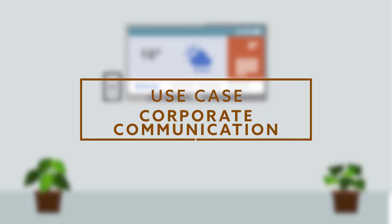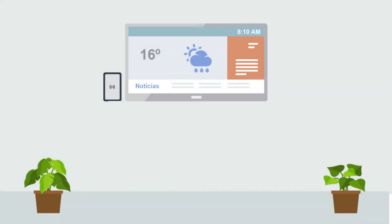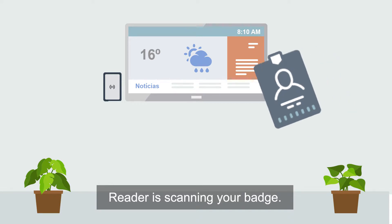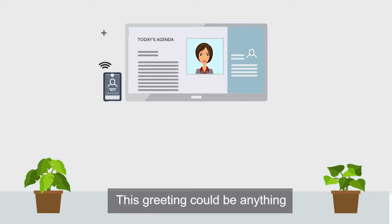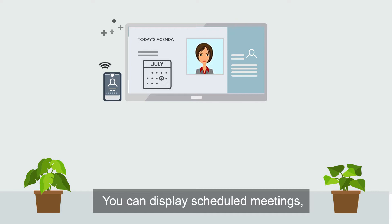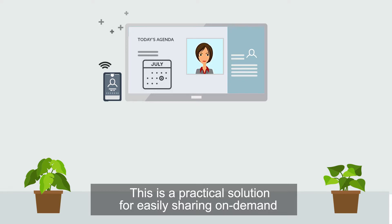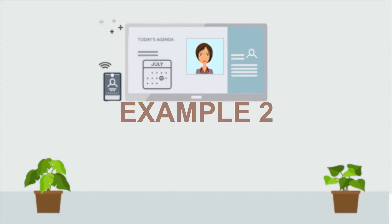Example one: corporate communication application. An employee identification card reader scans your badge. Once scanned, a special greeting is displayed on a TV located by the reader. This greeting could be anything — you can display scheduled meetings, HR announcements, company news, or anything you like.